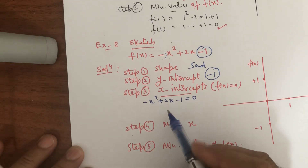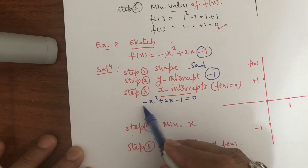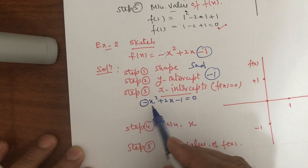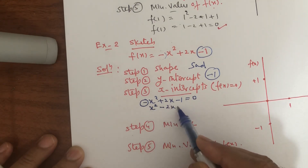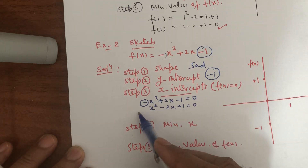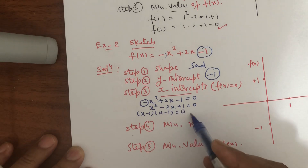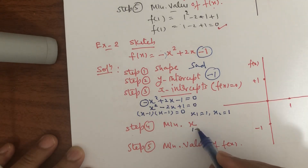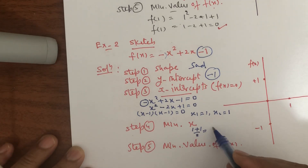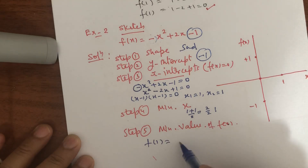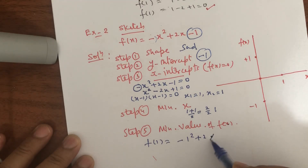I want to get the factors on the left side, and to do that I do not want anything with -x². We do not want anything with -x². Here, minus x² means I divide both sides by minus 1, giving x² - 2x + 1 = 0. Again I get the same factors: (x - 1)(x - 1) = 0, so x₁ = 1 and x₂ = 1. Minimum value of x is (1 + 1)/2 = 1. Putting x = 1 gives f(1) = -(1)² + 2(1) - 1 = -1 + 2 - 1 = 0.